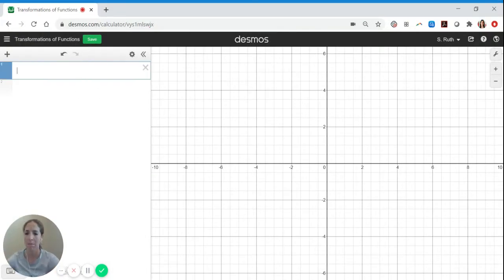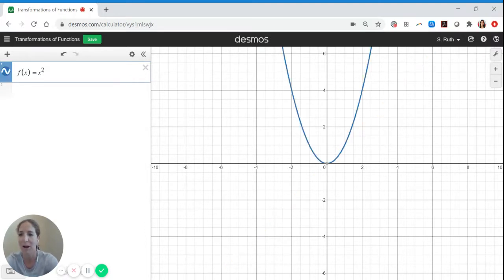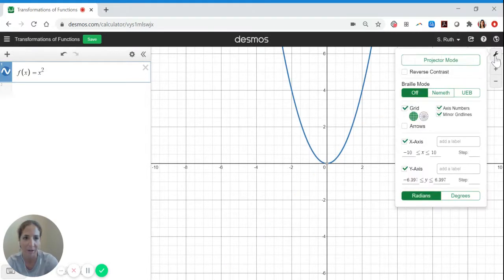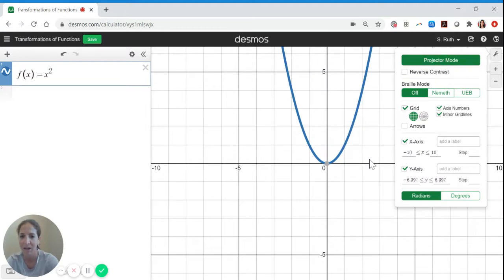So begin by typing in a function of your choice. Corresponding to today's video there's a document called toolkit functions, and that contains a lot of common functions: linear, quadratic, cubic, rational, a couple different examples there. So pick one of those. I'm going to choose our base graph of just a nice quadratic function, because who doesn't love a good quadratic?